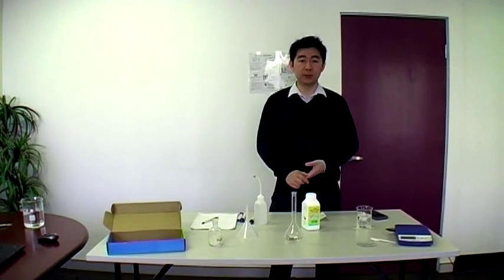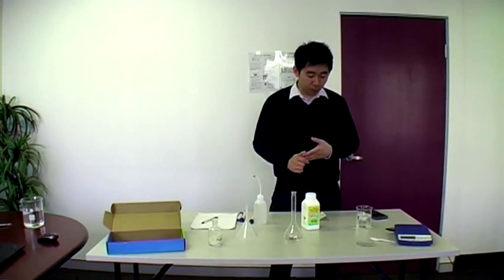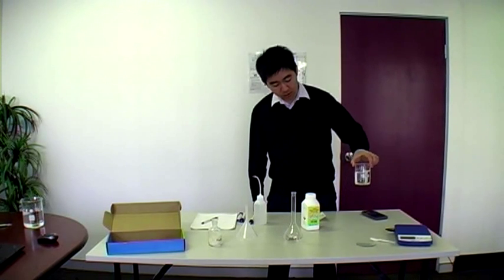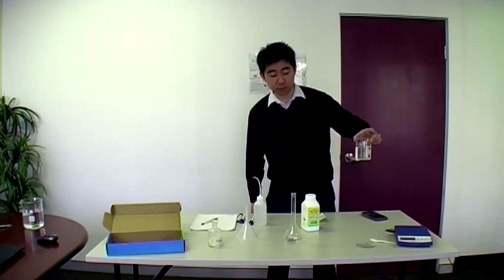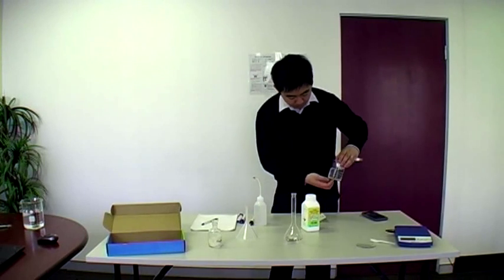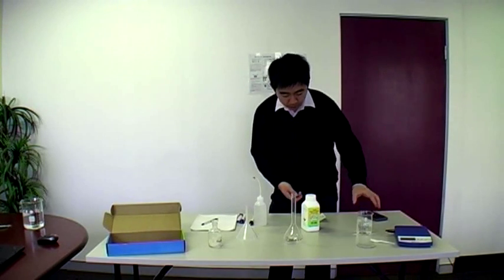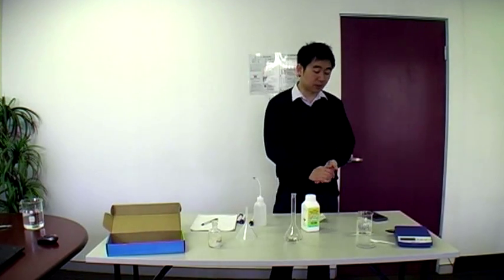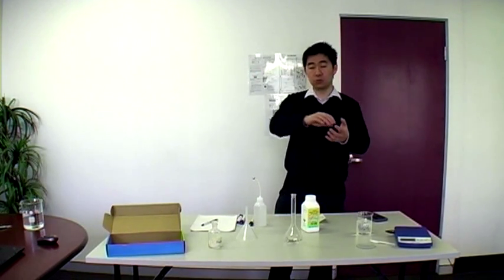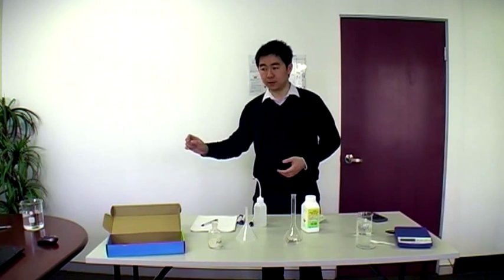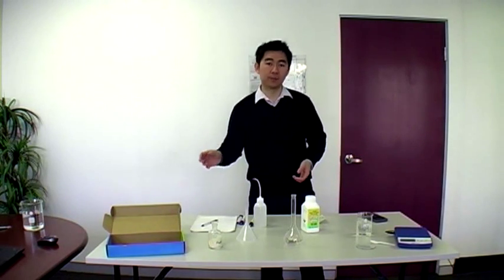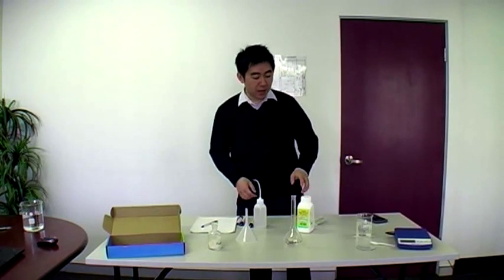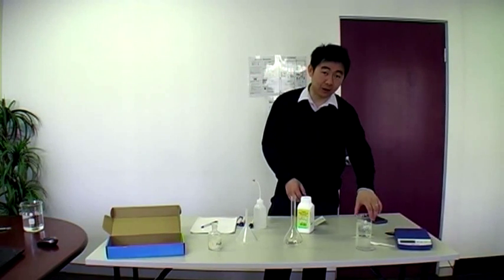Hello everyone. Today we're going to be doing our titration. What we have here is a beaker of unknown — this is what we're going to be testing and measuring. This is sodium hydroxide. We're going to titrate this and find the exact concentration of our sodium hydroxide, and then we're going to use this to titrate an acid, HCl or something, whatever I have lying around. But the main bit is finding the concentration.